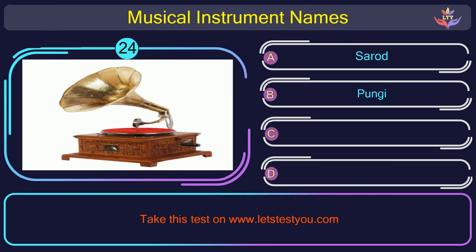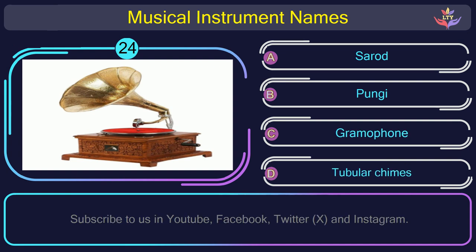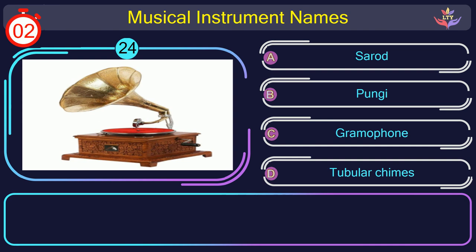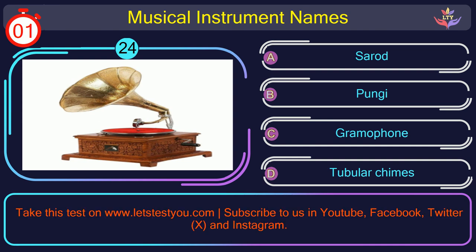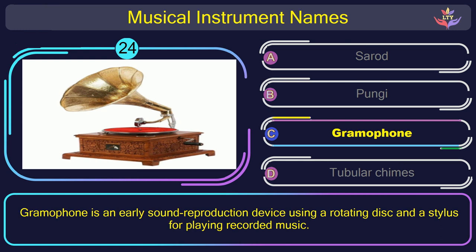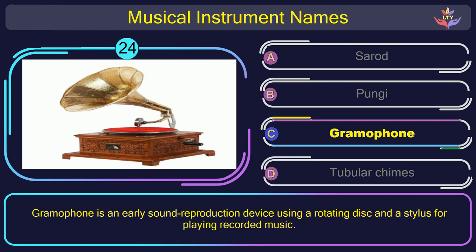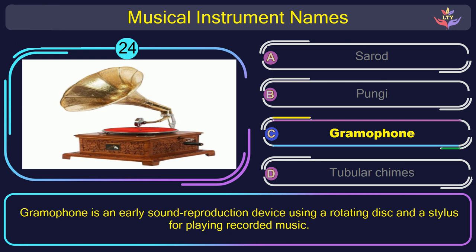Question number 24. Find the name of the musical instrument in this picture. The correct answer is option C: Gramophone. Gramophone is an early sound reproduction device using a rotating disc and a stylus for playing recorded music.